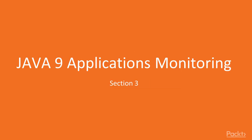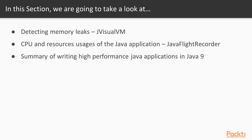Hello, this is the third section of writing high performance Java applications in Java 9. In this section we'll be looking at how to monitor Java 9 applications. We will be looking at how to detect memory leaks in Java applications using the JVisualVM tool. We'll also be examining CPU and resource usage using the Java Flight Recorder tool. At the end of this section there will be a summary of writing high performance Java applications in Java 9.